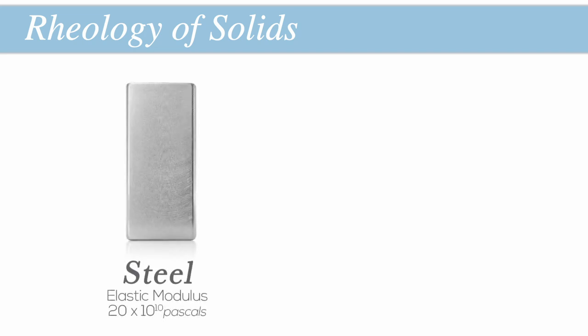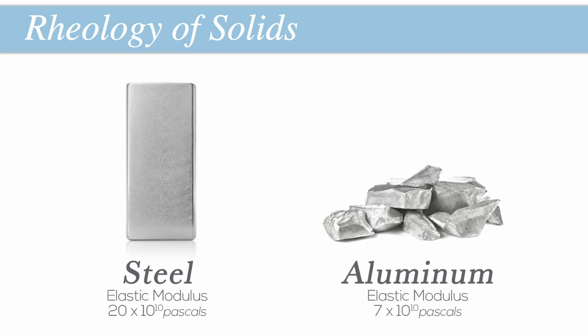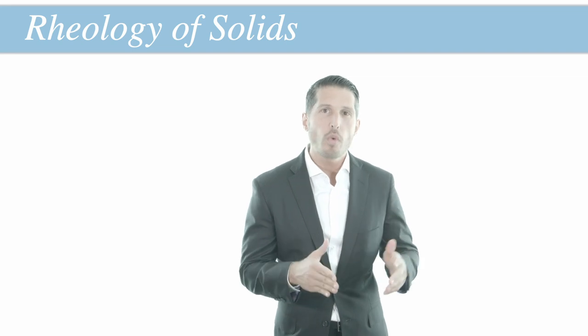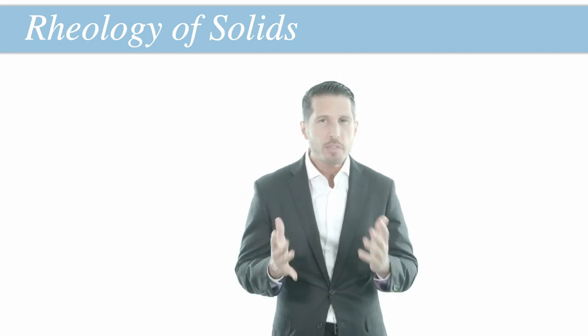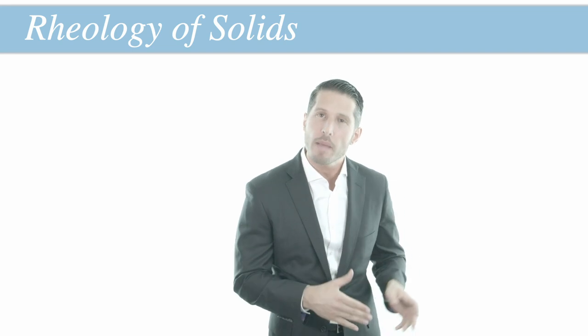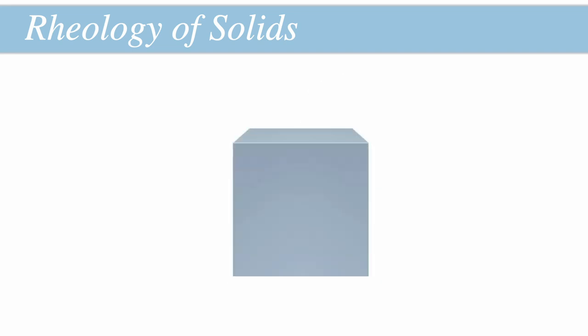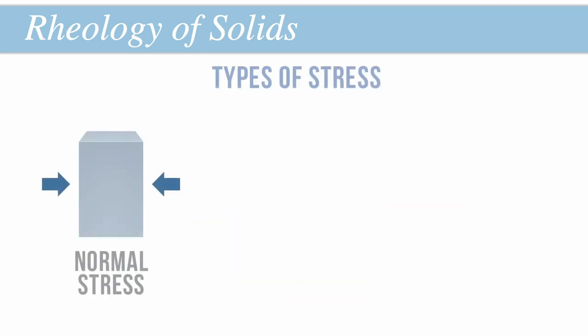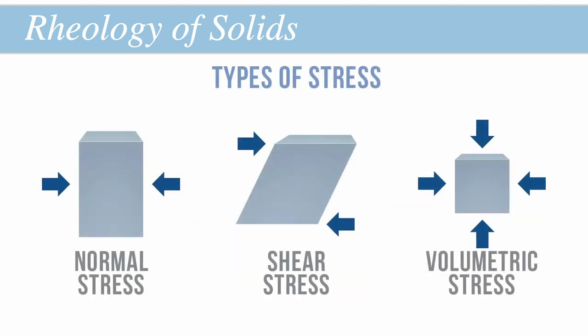For example, steel has a higher elastic modulus than aluminum, and thus steel has a greater resistance to deformation than aluminum because it can tolerate nearly three times as much stress before it strains or deforms. As it turns out, there are three different types of stress, each with its own modulus of elasticity, because of the different ways in which forces can act upon an object. A stress arises when two opposing forces act upon a material. Depending on how the forces are positioned relative to each other, one of three types of stress can occur: normal stress, shear stress, and volumetric stress.